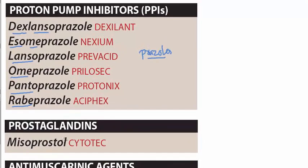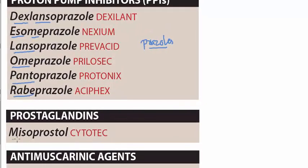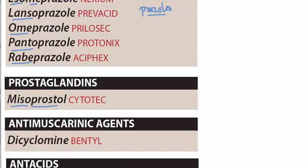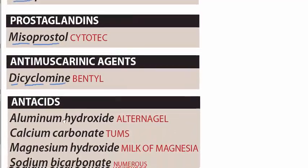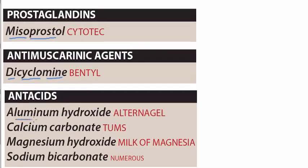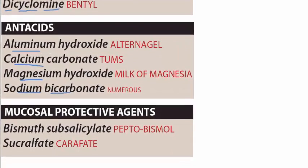Then we have prostaglandins — misoprostol. Then the antimuscarinic agents, in which we have dicyclomine. And the antacids: aluminium hydroxide, calcium carbonate, magnesium hydroxide, and sodium bicarbonate. Then we have mucosal protective agents — bismuth subsalicylate and sucralfate.